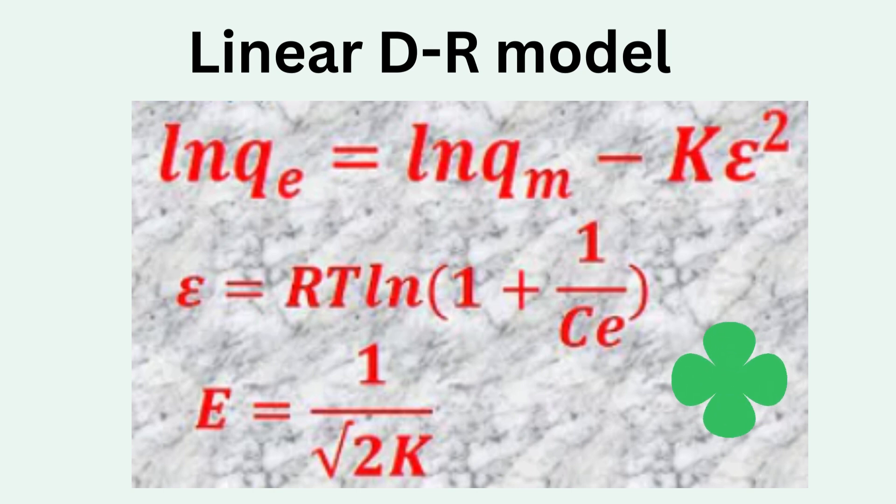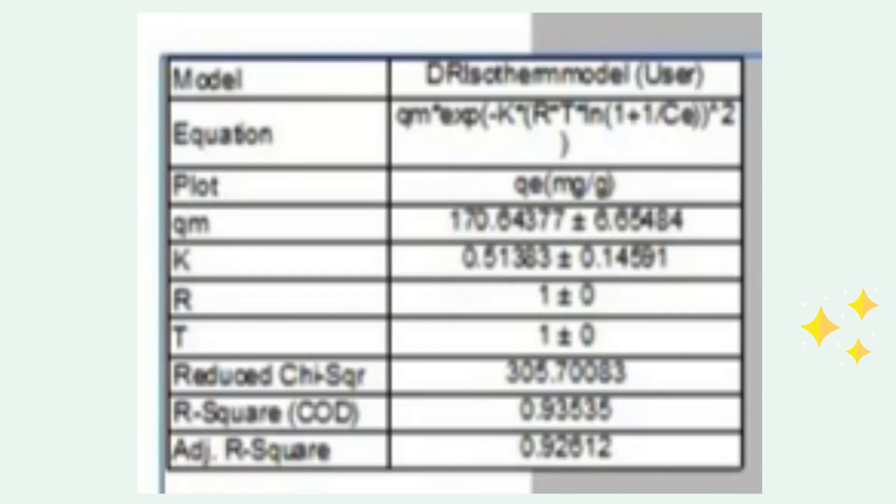Now, here is the linear equation: ln Q equals ln Qm minus K epsilon squared, where epsilon is the same. This K is known as the DR constant, which is often denoted by beta, and is used to calculate adsorption energy.